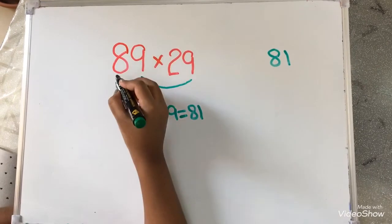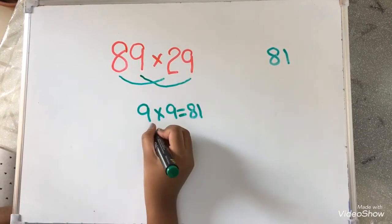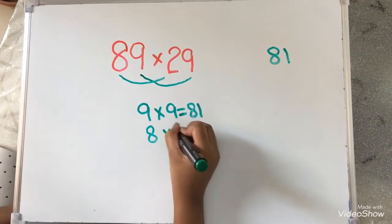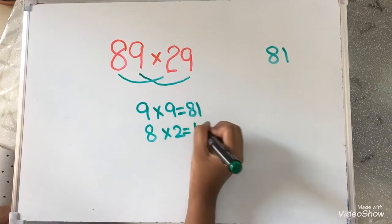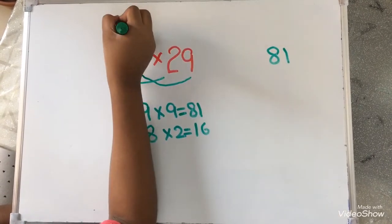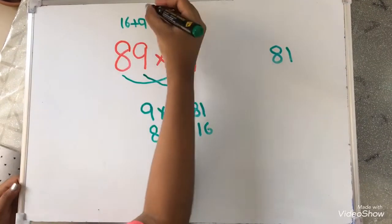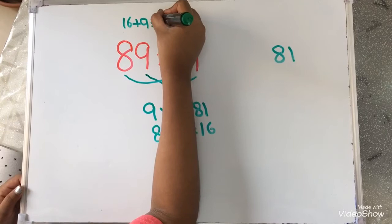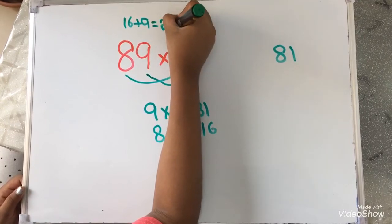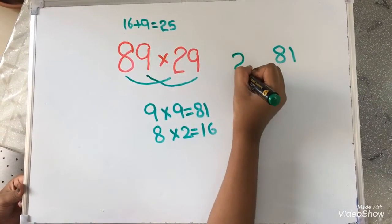Now, 8 into 2. 8 into 2 equals to 16. So, I am going to write 16 over here and plus 9. 16 plus 9 equals to 25. Now, I am going to write 25 over here.